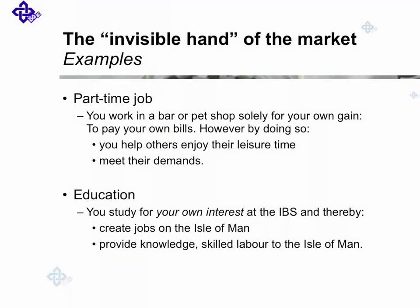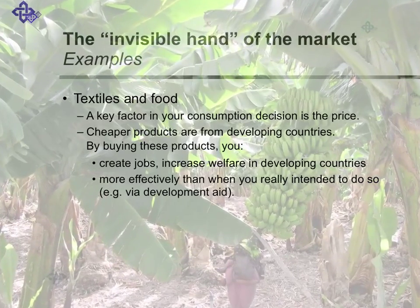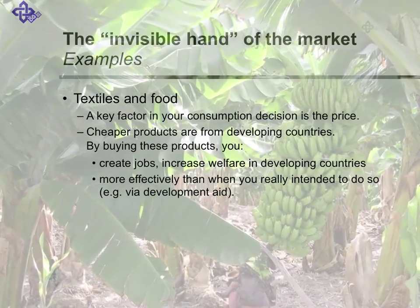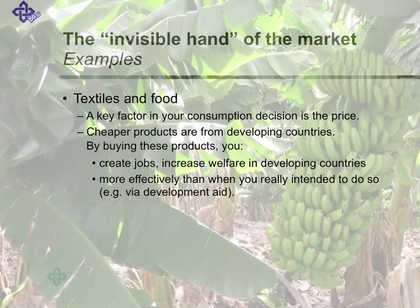What Smith means is: you work in a bar or pet shop solely for your own gain, to pay your own bills. However, by doing so, you help others enjoy their leisure time and meet their demands. You study for your own interests at the IBS and thereby create jobs on the Isle of Man and provide knowledge and skilled labour. More controversial may be the example about textiles and food — a key factor in your consumption decision will be the price. Cheaper products come from developing countries. By buying these products, you create jobs and increase welfare in developing countries, possibly even more effectively than when you really intended to do so, for instance via development aid.